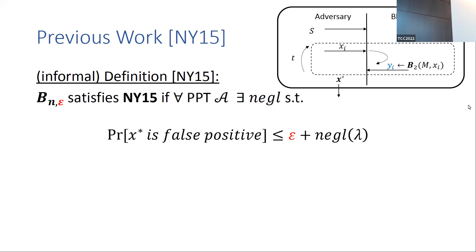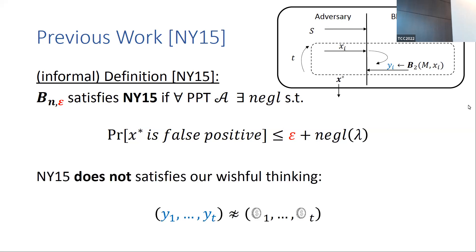We say that a bloom filter satisfies the Naor-Yogev (NY) definition if for every adversary, the probability that the output element is indeed a false positive is at most ε, meaning adaptive queries give no valuable information. We showed in our work that this robustness definition does not imply our wishful thinking. More concretely, we constructed a bloom filter that satisfies the NY robustness definition but fails to satisfy the wishful thinking — it produces clusters of false positives.